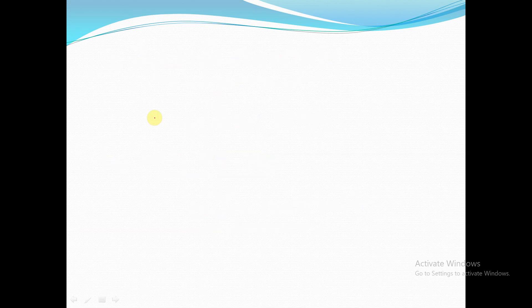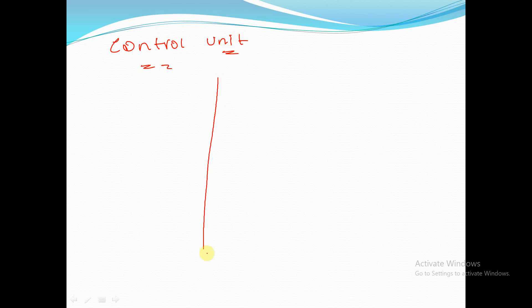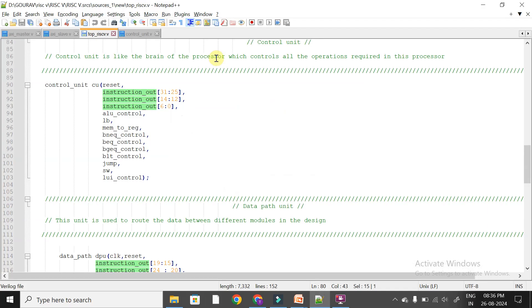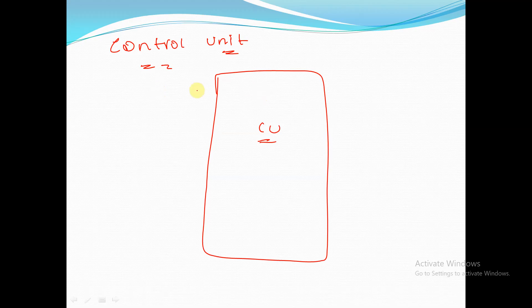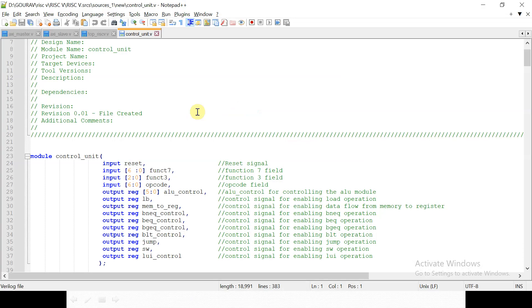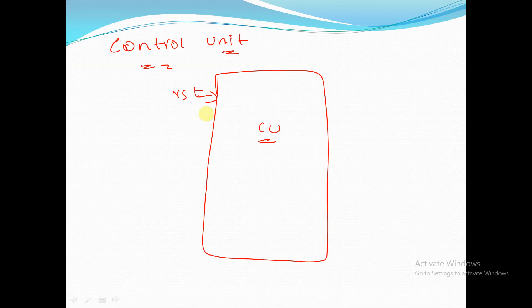We'll discuss what this control unit is and what we are going to do with it. The inputs of the control unit are: a reset signal, funct7, funct3, and opcode.